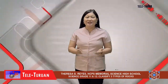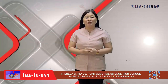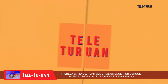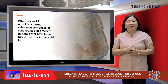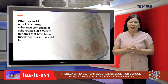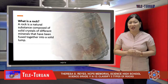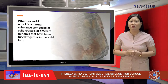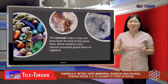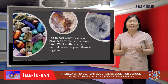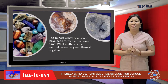In this lesson, we will focus on the types of rocks and learn to classify them into igneous, sedimentary, and metamorphic. First, let us recall what is a rock. To geologists of National Geographic, a rock is a natural substance composed of solid crystals of different minerals that have been fused together into a solid lump. The minerals may or may not have been formed at the same time, but what matters is the natural processes glued them all together.